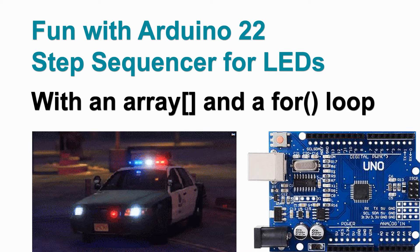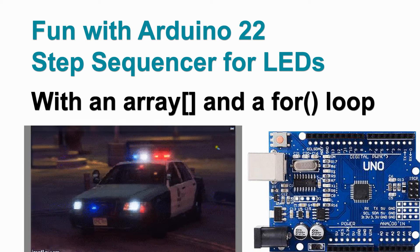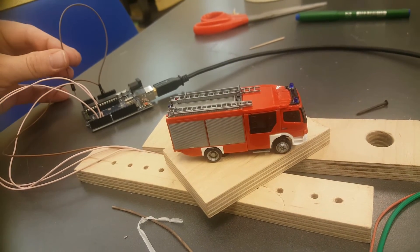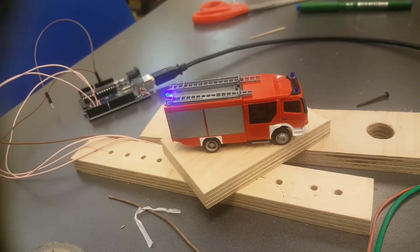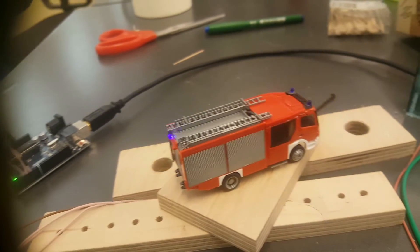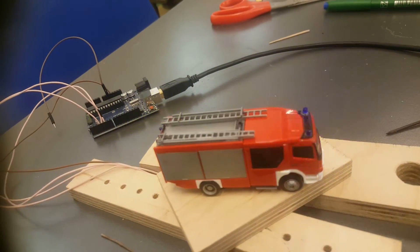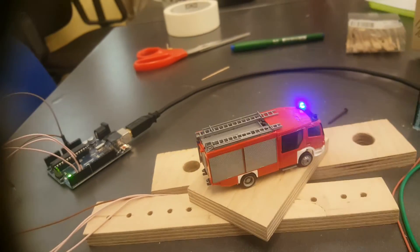Welcome to video 22 on Fun with Arduino. It can really liven up your layout when you have a police car, ambulance, or firefighter car with blinking lights — it's always fun to watch. The result we are going to strive for is a firefighter car with three blinking LEDs, and the whole idea is that we are going to have one piece of software where the blinking sequence is configurable.